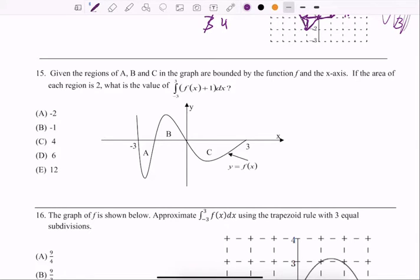Number 15, given the regions A, B, and C in the graph are bounded by the function f and the x-axis, if the area of each region is 2, what is the value from negative 3 to 3?